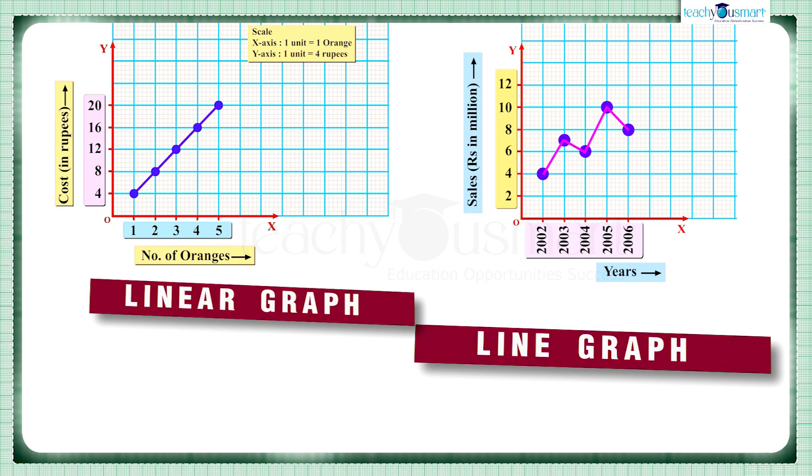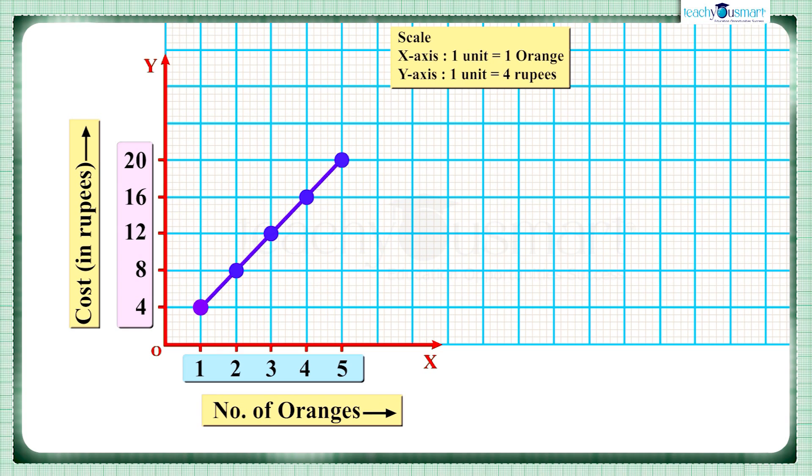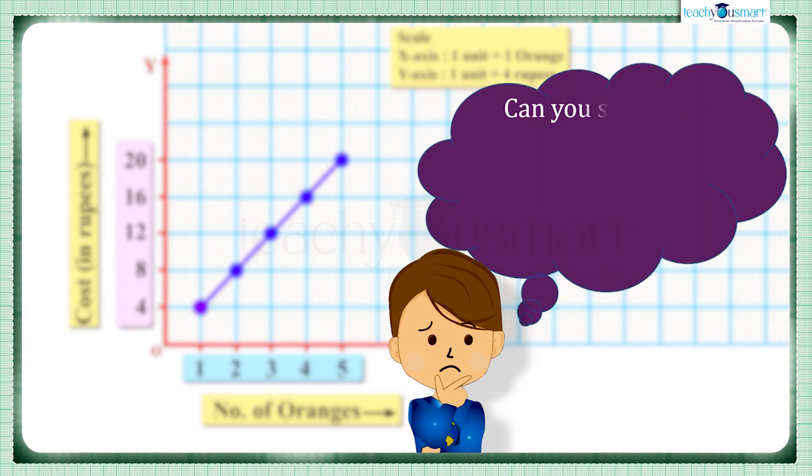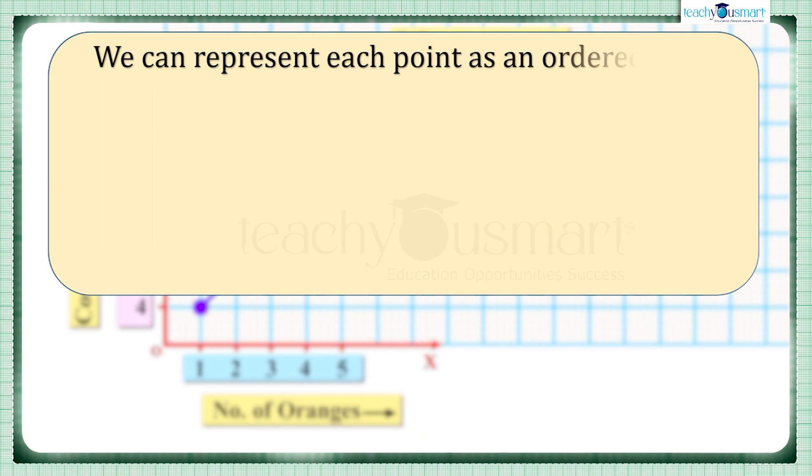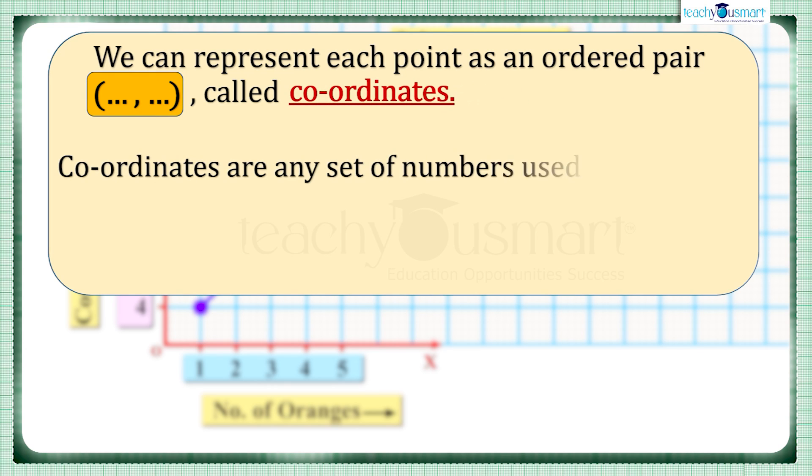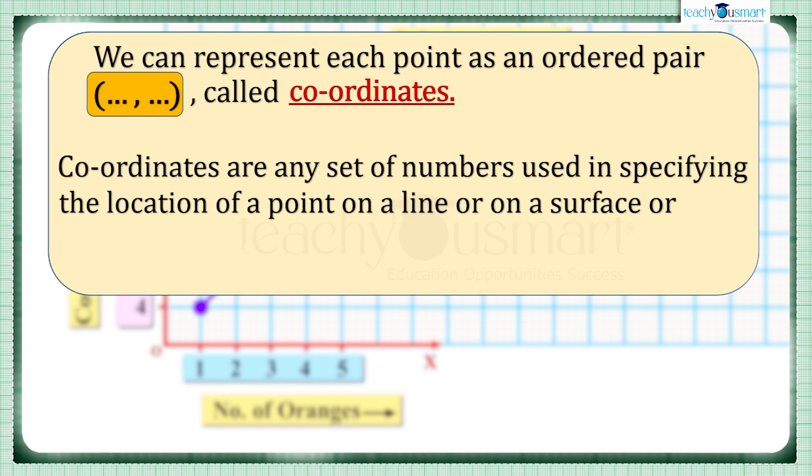In this linear graph we have five points. Can you say the exact position of these points or how can we represent these points? Coordinates. Yes, we can represent each point as an ordered pair called coordinates. Coordinates are any set of numbers used in specifying the location of a point on a line or on a surface or in space.